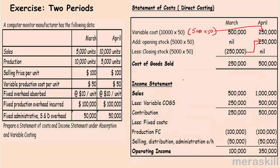Looking at the income statement under variable costing: sales of 5,000 units at 100 = 500,000 in March, and 10,000 units = 1 million in April. Less variable cost of goods sold — 250,000 and 500,000. This gives the contribution. Less fixed costs: production overhead actually incurred 100,000 and selling distribution overheads 50,000. Therefore operating income is 100,000 in March and 350,000 in April, a total of 450,000.